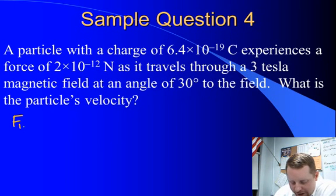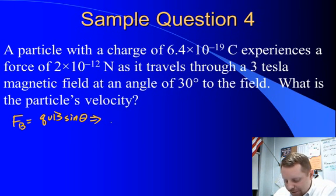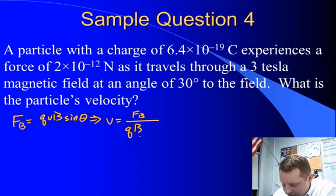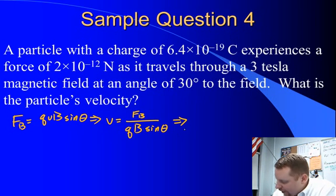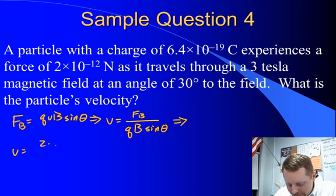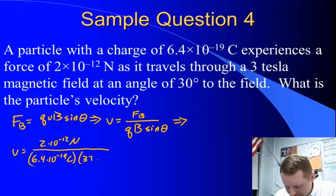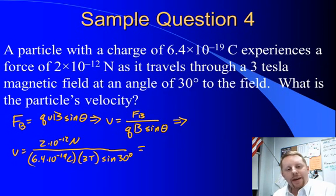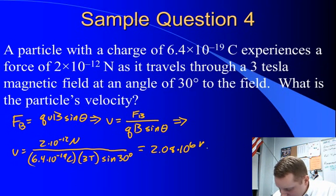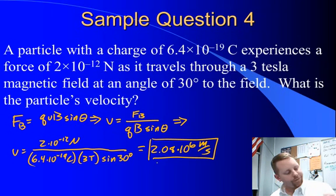Well, we can use our same equation. Magnetic force equals qvB sin theta. We're looking for velocity. So let's solve for velocity, getting that all by itself. V is the magnetic force divided by q times B, field strength times the sine of theta. Now we can substitute in velocity equals 2 times 10 to the minus 12 newtons, divided by our charge, 6.4 times 10 to the minus 19 coulombs, magnetic field strength, 3 tesla, times the sine of 30 degrees. Run all that through my calculator, and I come up with a velocity of about 2.08 times 10 to the sixth meters per second. Pretty straightforward.